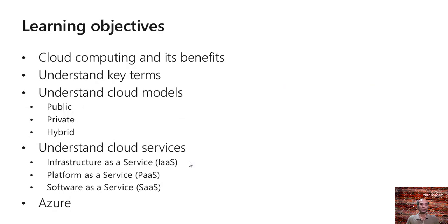Today we are going to learn about what is cloud computing and the benefits of it. We will understand the key terminology involved in cloud computing. There are three different types of cloud models: public, private, and hybrid. We will also look at the different types of cloud services such as infrastructure as a service or IaaS, platform as a service or PaaS, and software as a service or SaaS. Finally, we will take a look at what is Azure and walk through the Azure portal.